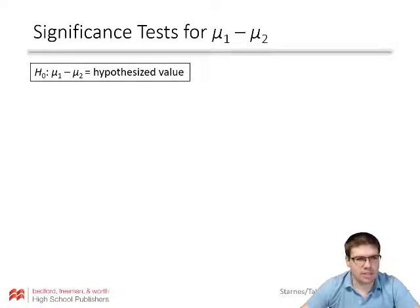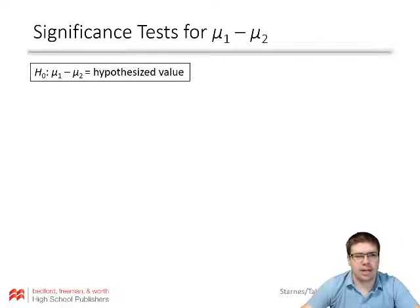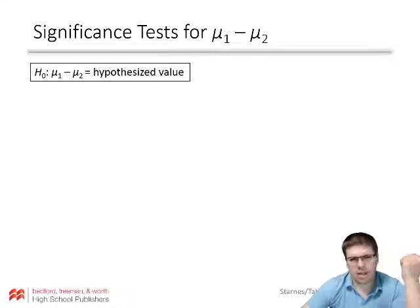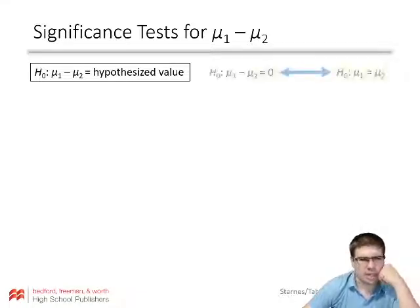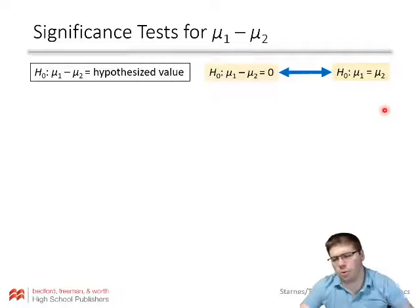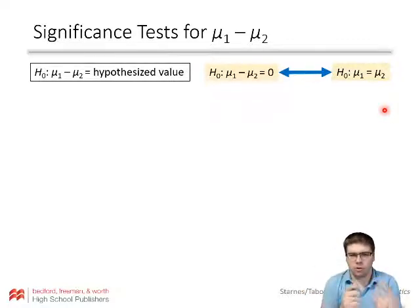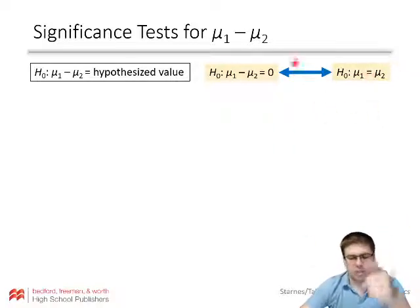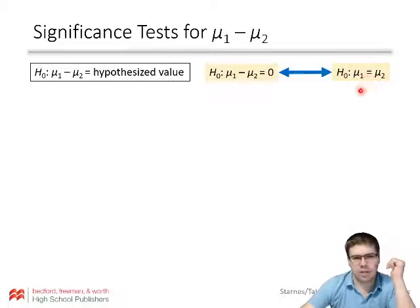The significance test: you could have your null hypothesis that mu1 minus mu2 equals some hypothesized value. The vast majority of the time — in fact, pretty much all the time — the only way our calculator can do this test is to assume that value is zero. That means the difference is zero, which is the same as saying those two means are equal. So we're really testing to see whether two means are the same, or if our data shows a significant difference and we could reject those being the same.